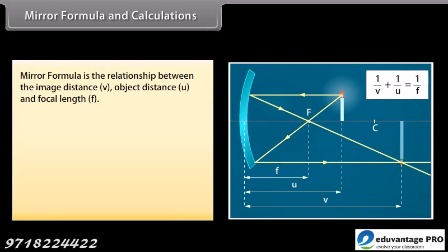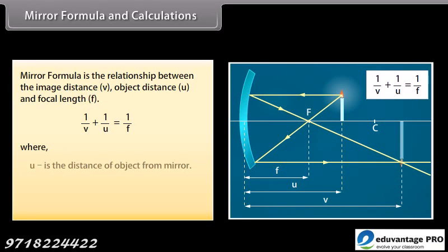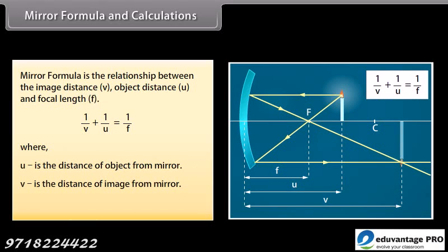Mirror formula and calculations. The mirror formula is the relationship between the image distance V, object distance U, and focal length F — where U is the distance of the object from the mirror, V is the distance of the image from the mirror, and F is the focal length of the mirror.